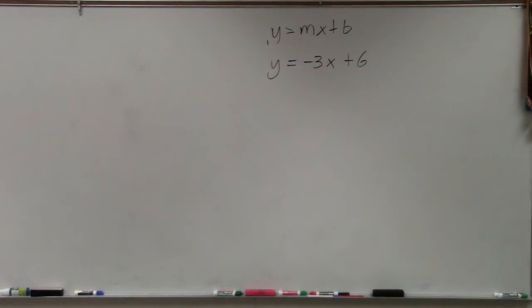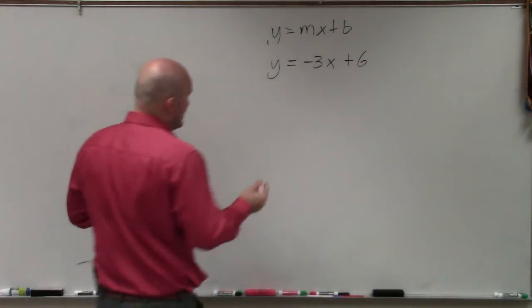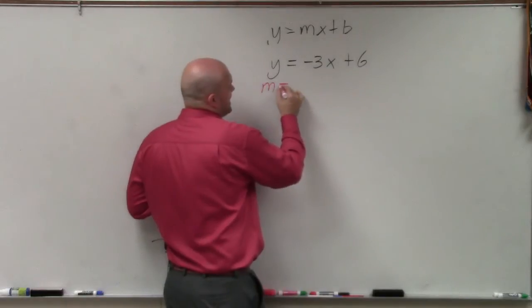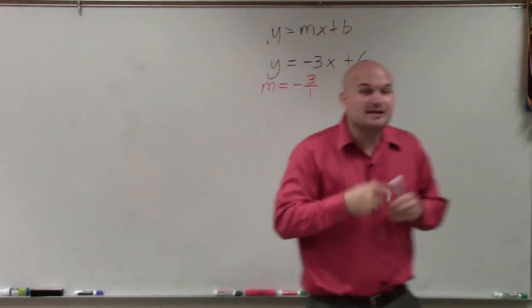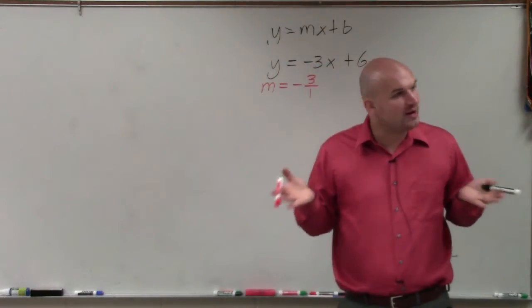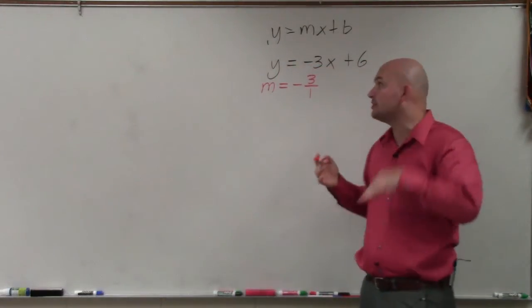The best advice for you would be to identify your slope and your y-intercept. So in this case, my m is going to be negative 3 over 1. Again, if you don't have your slope as a fraction, rewrite it as a fraction. If it's a whole number, always put it over 1.